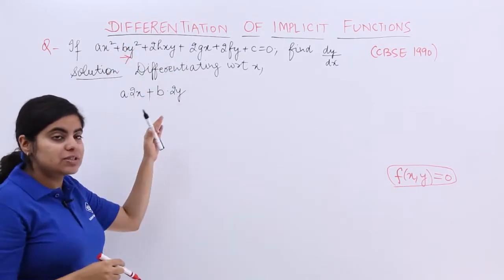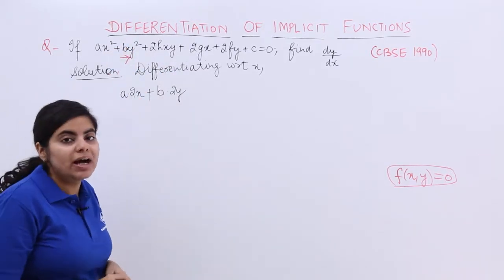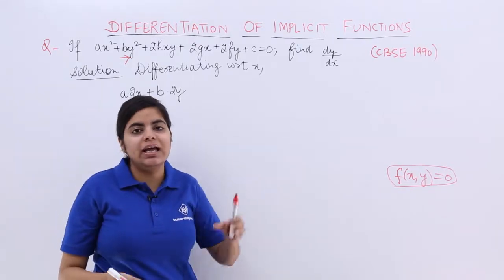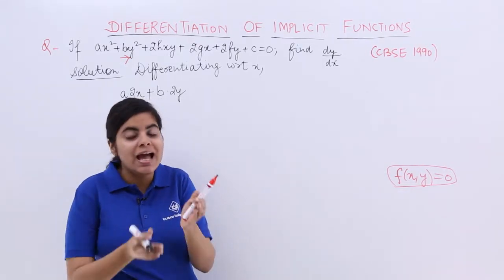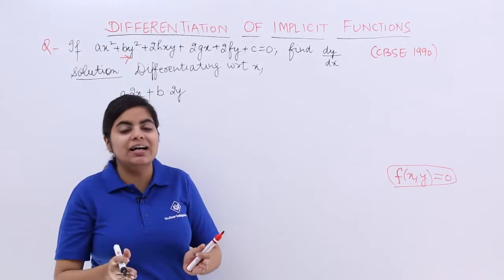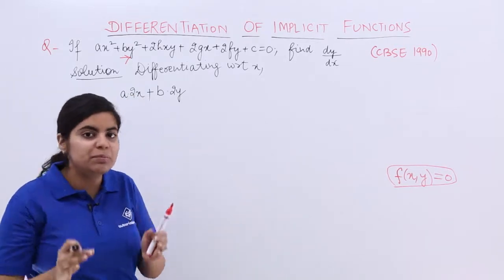We started with this. We saw b, we wrote here. y², I said, is something which has to be differentiated and y with respect to x again has to be differentiated.